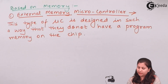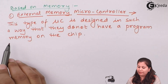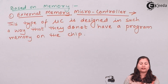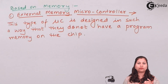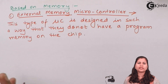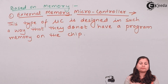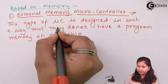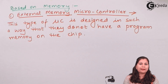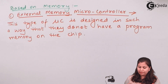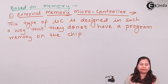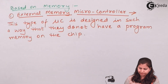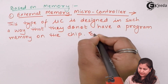In external memory microcontrollers, they are designed so that they do not have program memory on the chip. Normally a microcontroller chip has all devices — input/output devices, memory, CPU, serial communication ports, timers, and counters — all embedded on the same chip. But in external memory microcontrollers, there is no program memory on the chip. An example of an external memory microcontroller is the 8031.